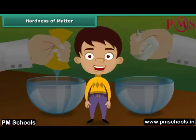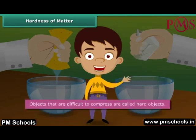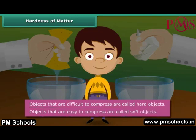Which of the two are you able to squeeze? Of course, the sponge. Can you squeeze the stone? You cannot. Objects that are difficult to compress are called hard objects. Objects that are easy to compress are called soft objects.